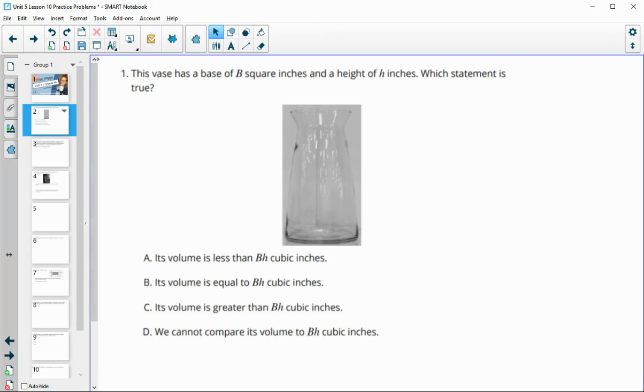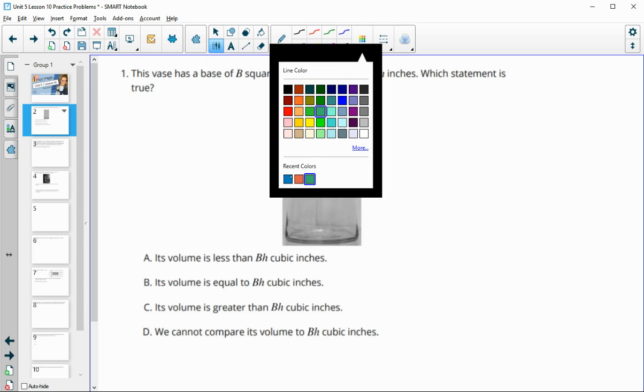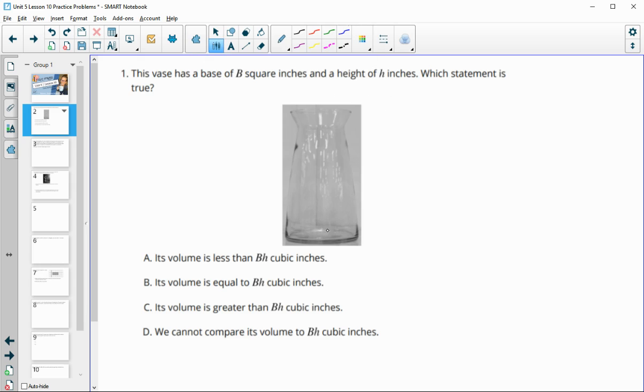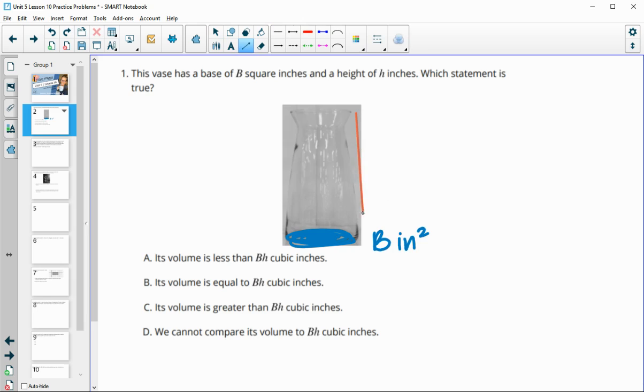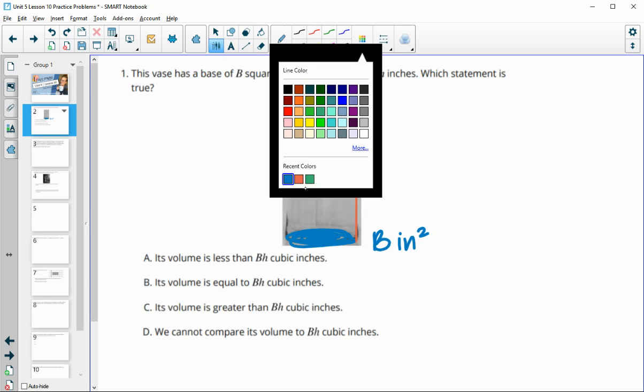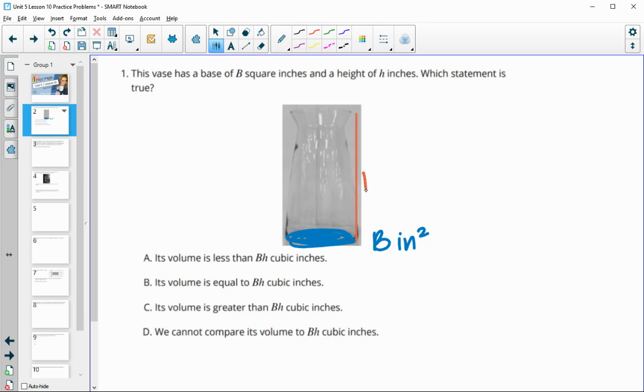Number one has a vase that has a base of B square inches and a height of eight inches. The area of this is B inches squared and the height is H. Now this problem asks us to select what we think is true about the volume.